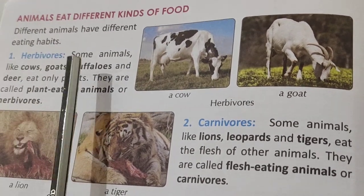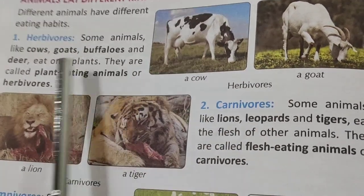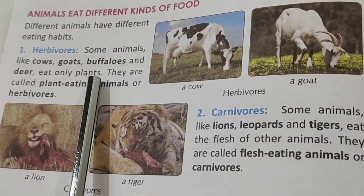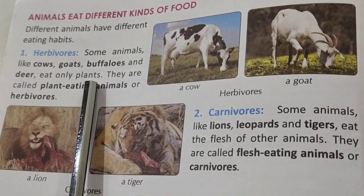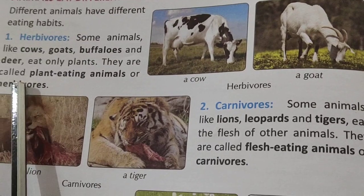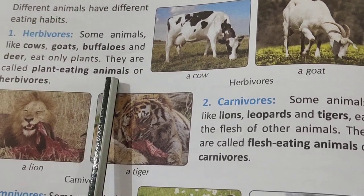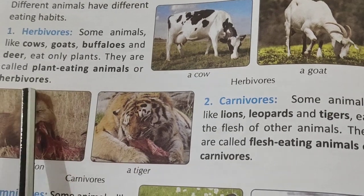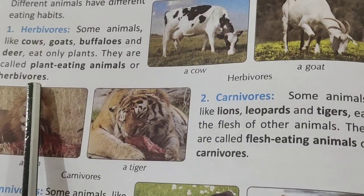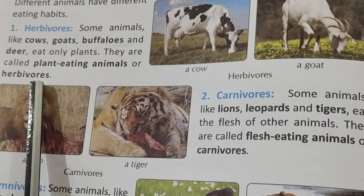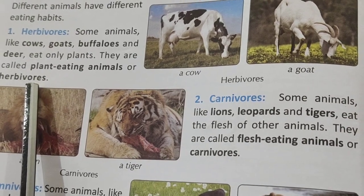Number one: Herbivores. Some animals like cows, goats, buffaloes, and deer eat only plants — यह सिर्फ plants खाते हैं। They are called plant-eating animals, or herbivores — क्योंकि यह herbs खाते हैं। Examples of herbivores: cow, goat, etc.